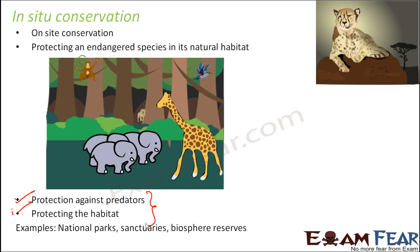There are many national parks in India, such as the Bandipur National Park in Karnataka, the Bannerghatta National Park also in Karnataka, the Gir National Park in Gujarat, the Hazaribagh National Park in Jharkhand, and Jim Corbett National Park in Uttarakhand. All of these national parks are the natural habitat of the animals living there. Visitors can come but are not allowed to cause any harm to the animals or the area, so the animals and their habitat are both protected.